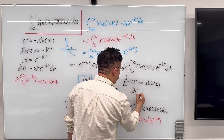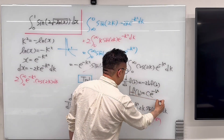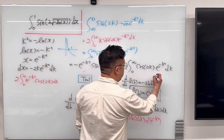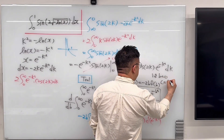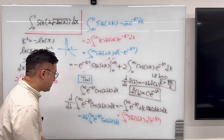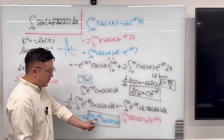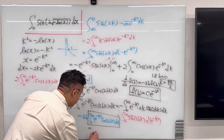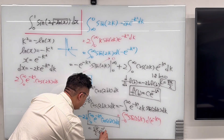The solution to f'(b) = −2b·f(b) has the form f(b) = C times e to the power of negative b². Plugging in b = 0, the constant C must equal square root of pi over 2. Therefore, the integral from 0 to infinity of e^(−k²) times cosine(2bk) dk equals (√π / 2) times e to the power of negative b².